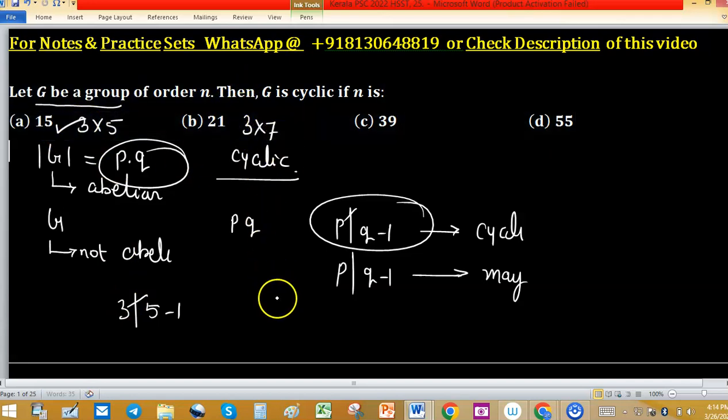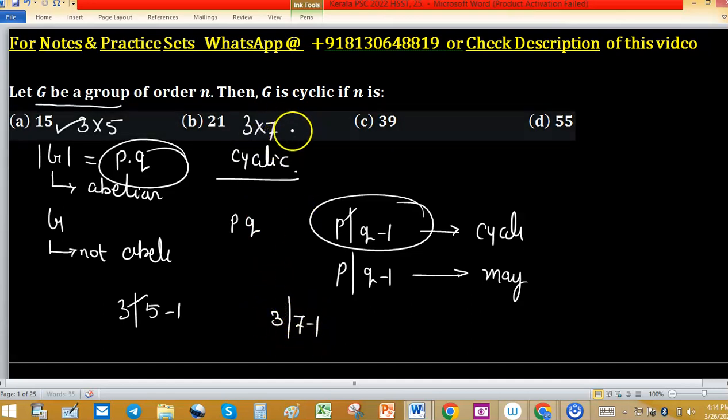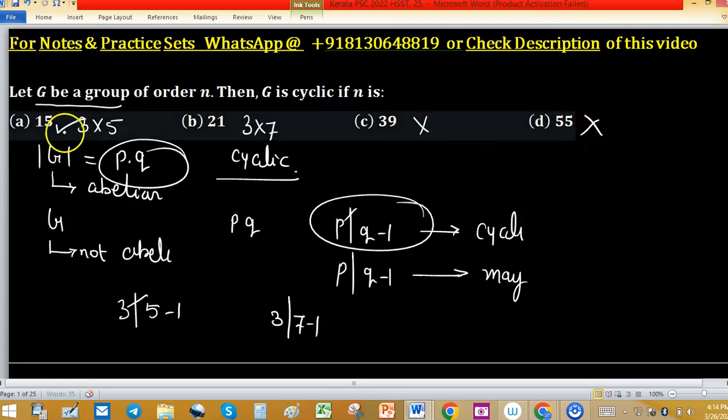...but 3 divides 7 minus 1. We cannot say about option B, and similarly options C and D. So the correct option for this problem is option A.